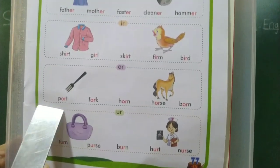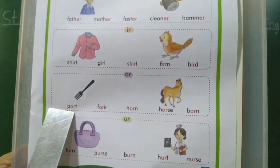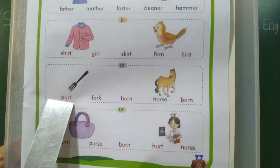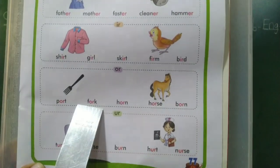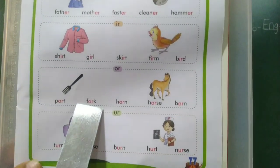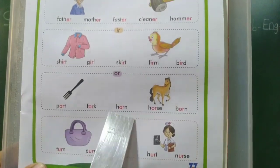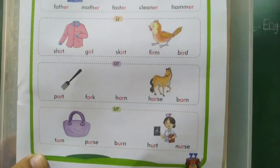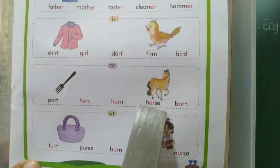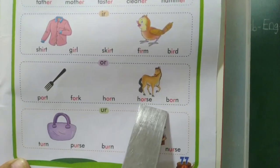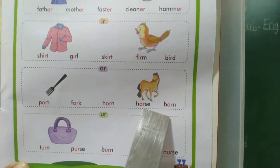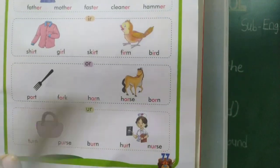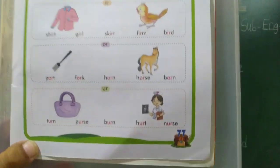Next, O-R. P-O-R-T — port. F-O-R-K — fork. H-O-R-N — horn. H-O-R-S-E — horse. B-O-R-N — born.